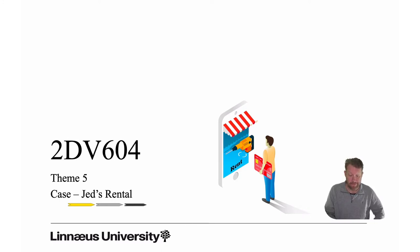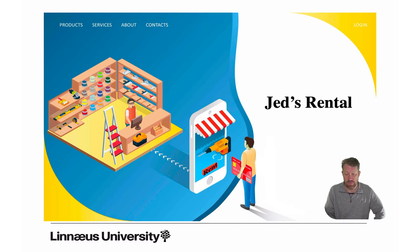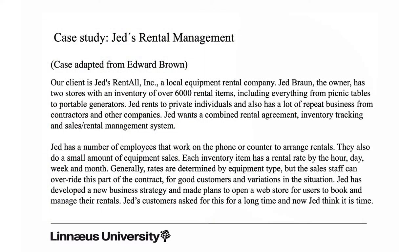Welcome to this second lecture in the fifth theme on architecture tactics in 2DB604. In this lecture we will have a closer look at the Jets rental case study and see how tactics can play a role in the architecture design activity. Jets rental is about Jen — he owns a rental company and has decided to put his business online, meaning there should be a web store where users can make reservations for rentals and manage their accounts.